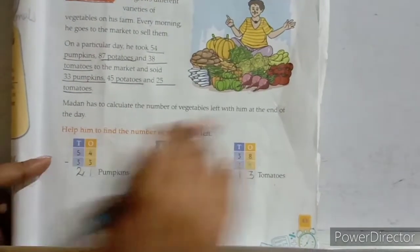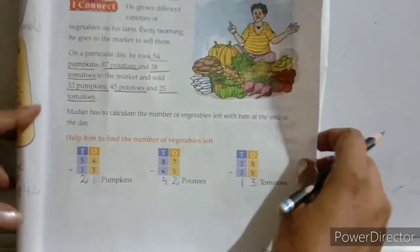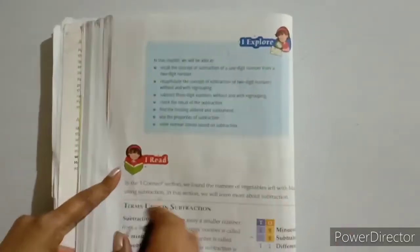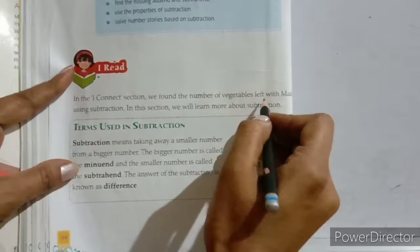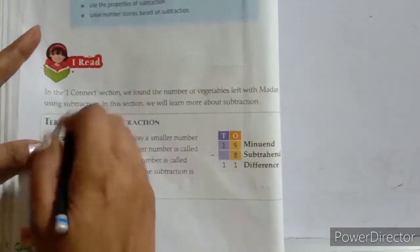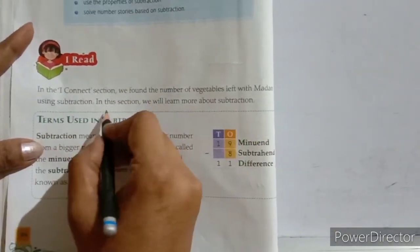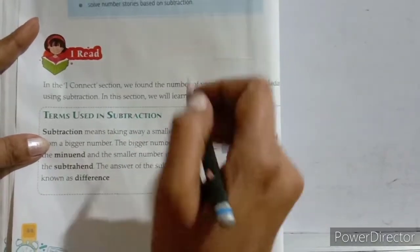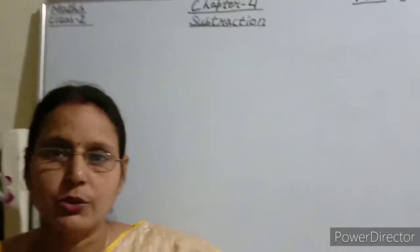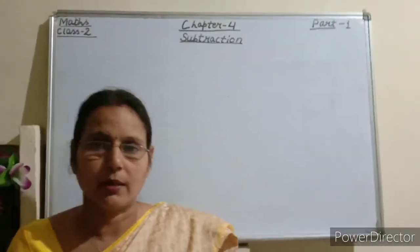In the I connect section, we found the number of vegetables left with Madan using subtraction. In this section, we will learn more about subtraction — specifically, the terms used in subtraction.